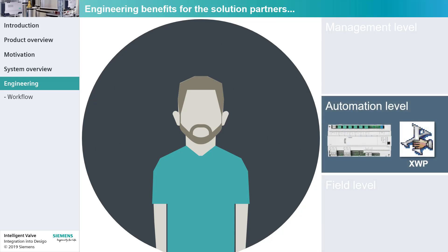At the automation level, XWorks Plus and ABT-Site complement each other perfectly. With XWorks Plus, project data from both PX Primary Automation Stations and intelligent valves can be managed from the same place. The function Network Check allows checking the device network configurations of both PX Primary Automation Stations and intelligent valves. In doing so, errors such as duplicated or incorrectly entered IP addresses can be detected and corrected at an early stage.